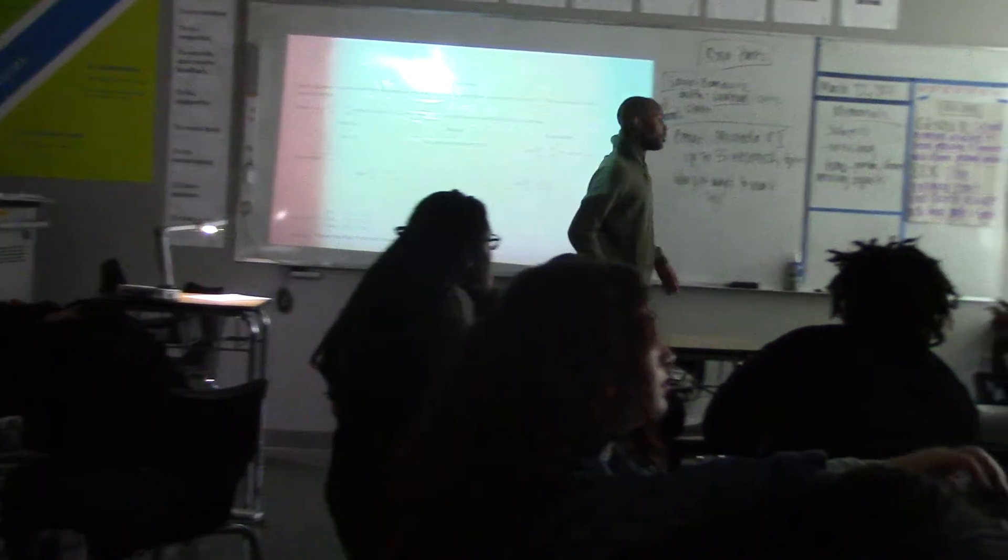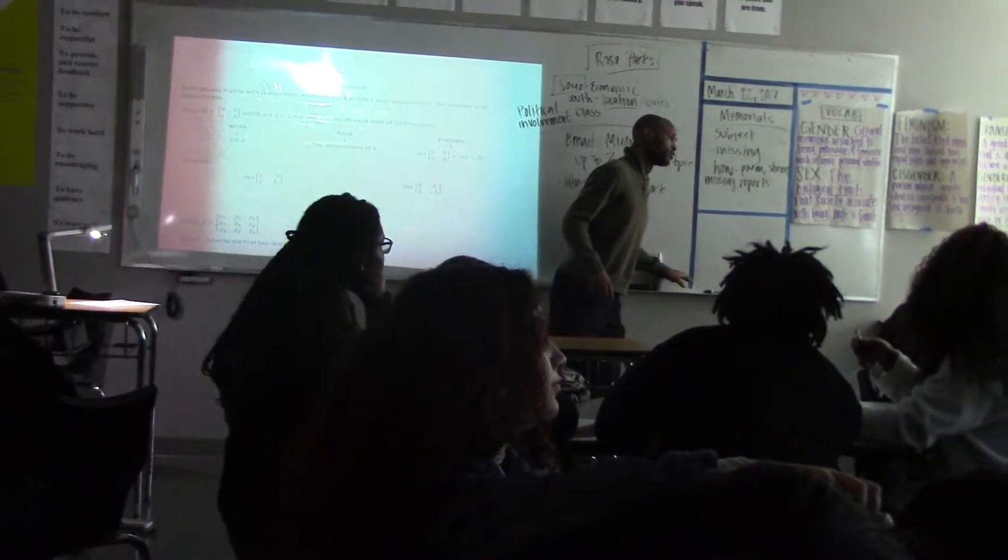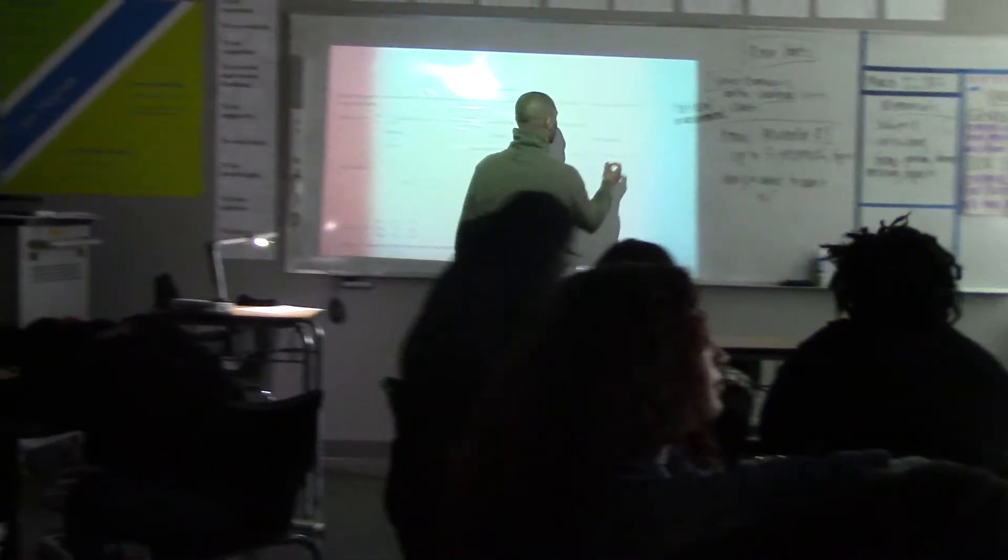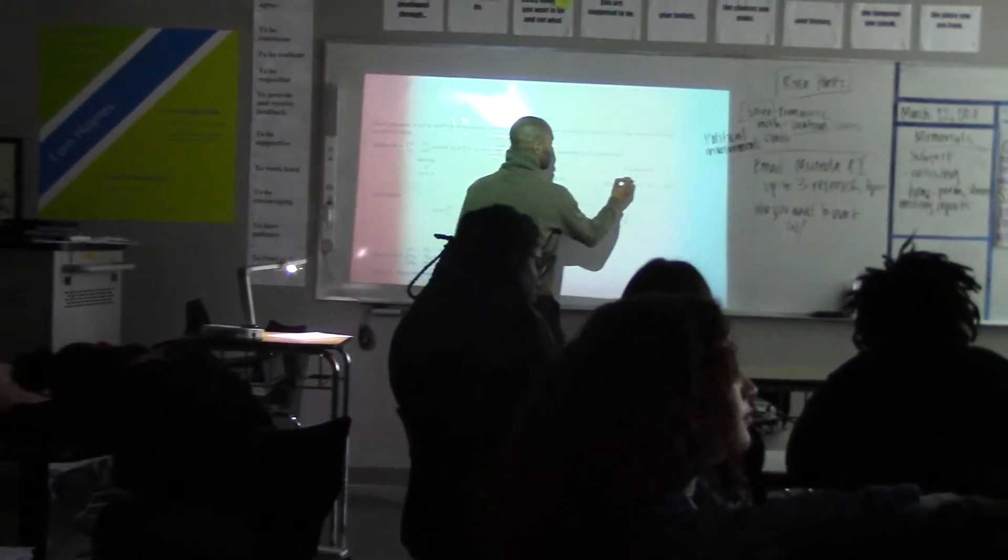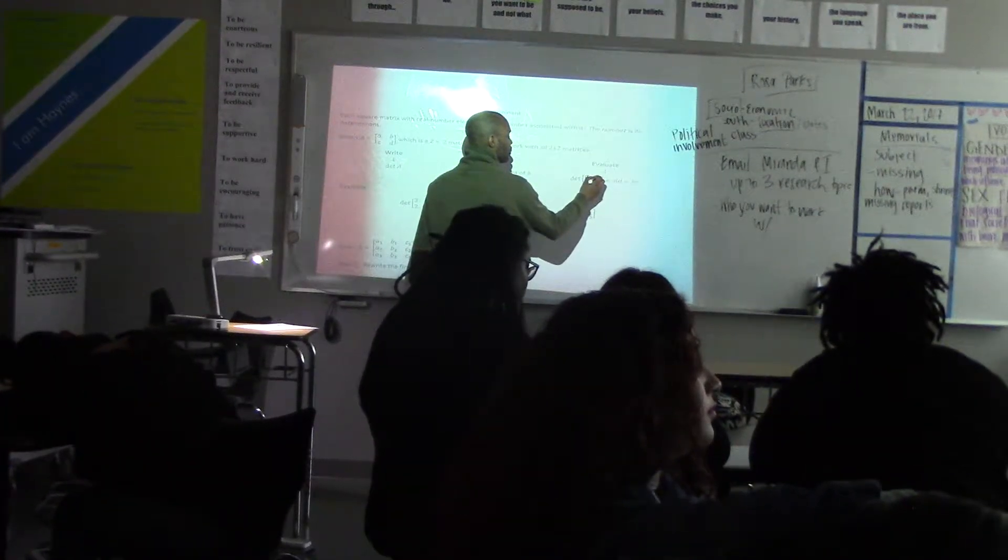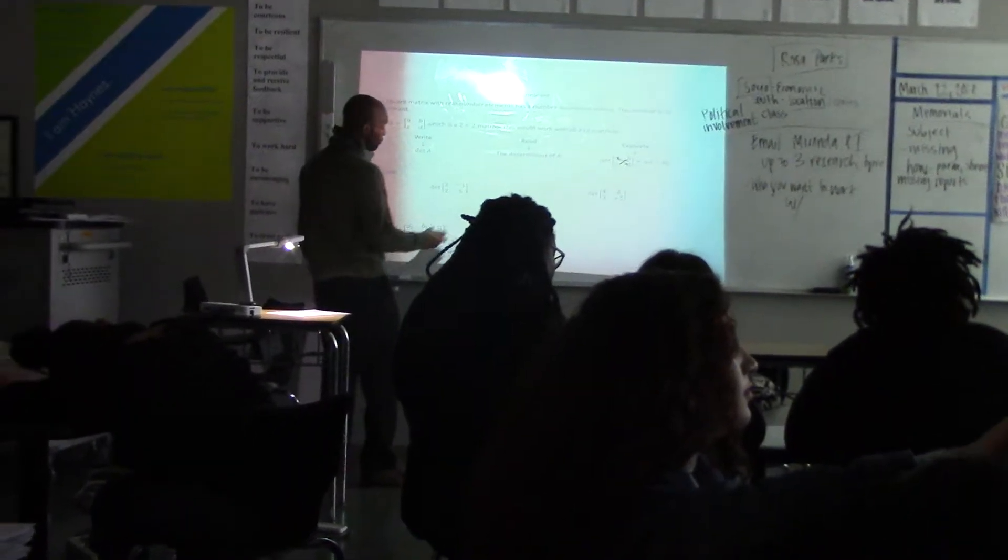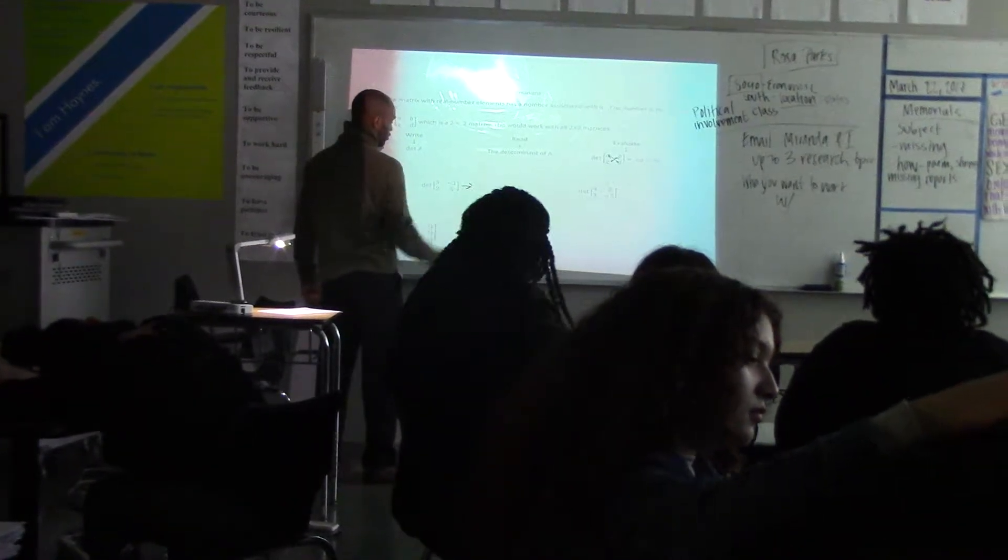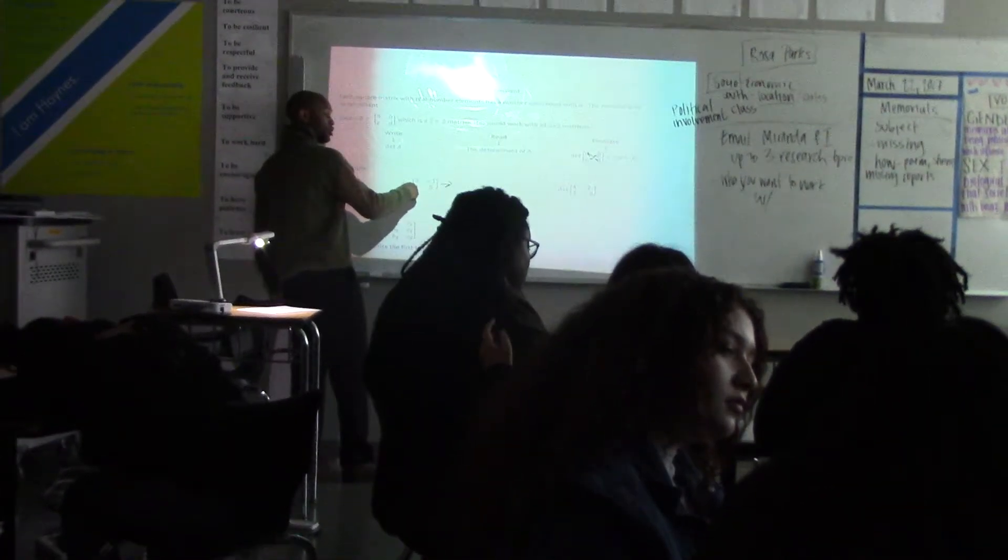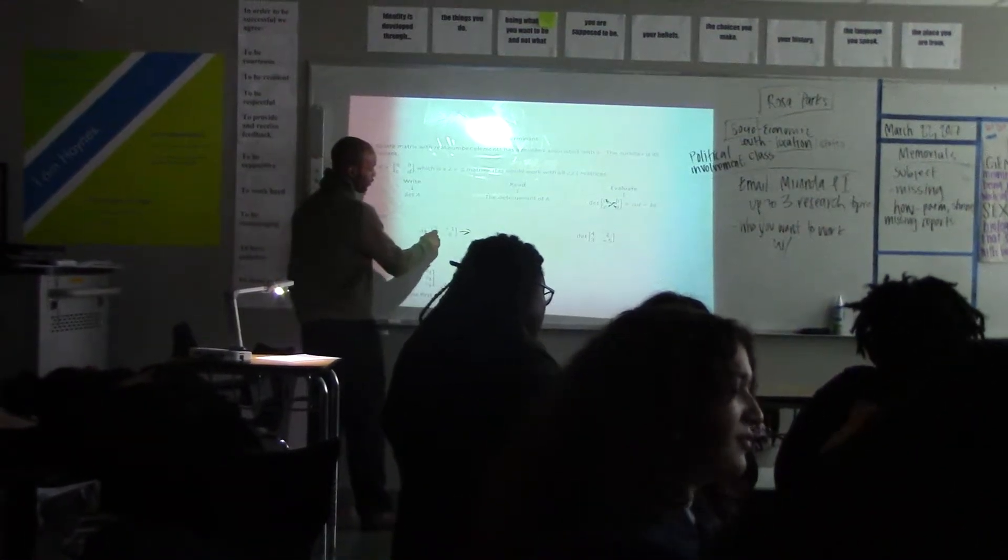Meaning, you just take the product, the difference of the diagonals by A, D, subtract B, C. You just take the difference of the diagonals. So you're multiplying these two, and taking the difference of these two.